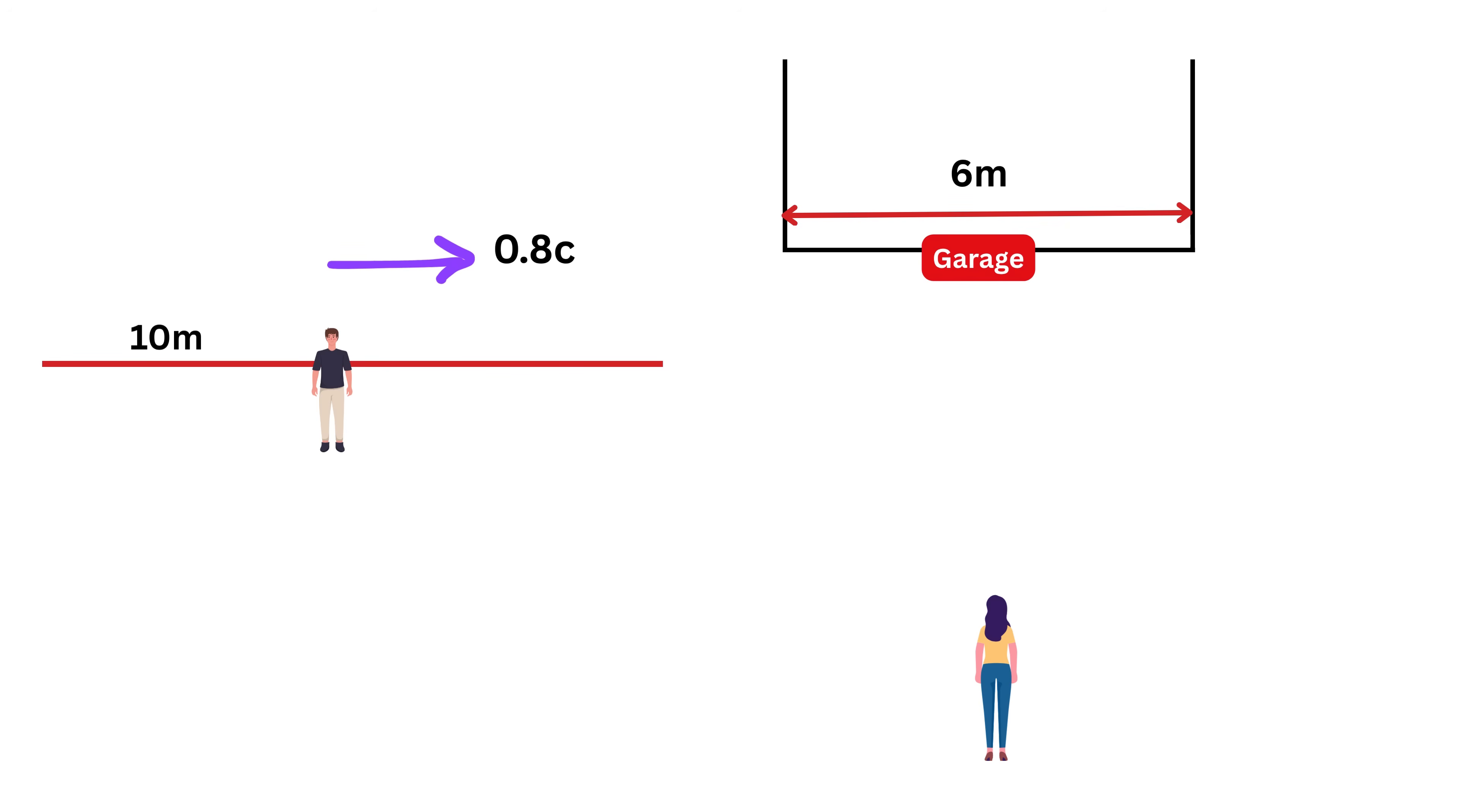Everything works according to the plan, and both the garage doors and the pole are safe, at least according to Alice. Now here comes the twist. From Bob's point of view, he is at rest and it is the garage that is rushing toward him.